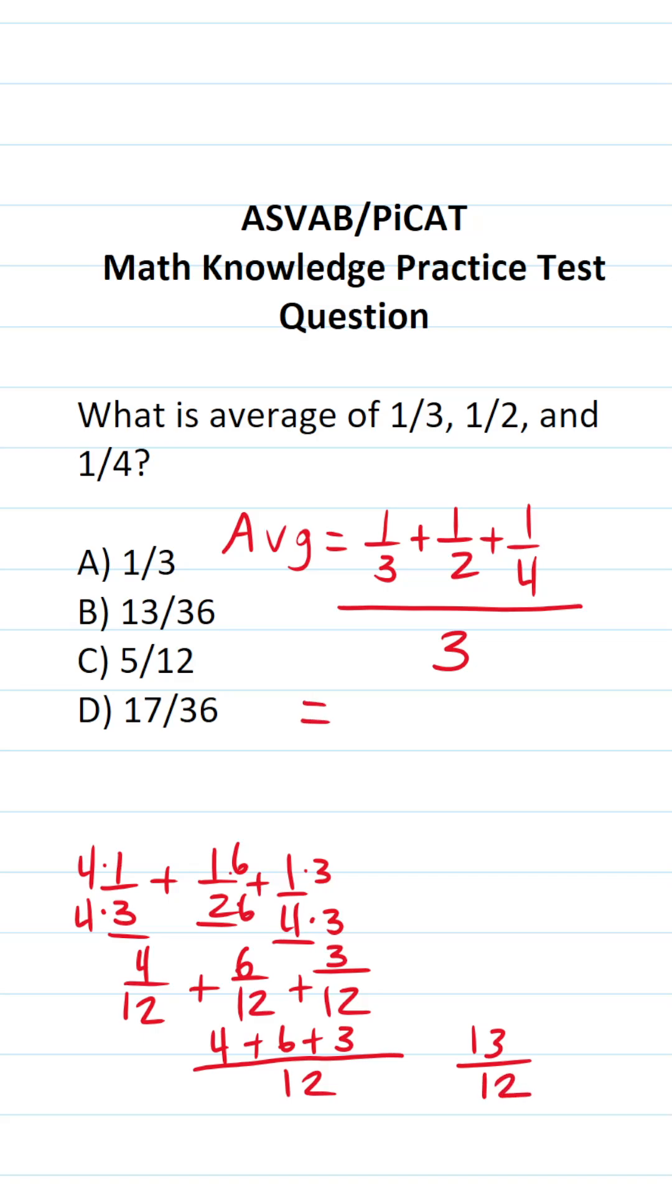All right so this becomes thirteen over twelve divided by three. Now what we're really doing here is dividing fractions because I could write three as a fraction by placing it over one. And when you divide two fractions you follow the algorithm keep change flip. That is to say we're going to keep this top fraction the same.